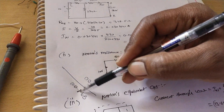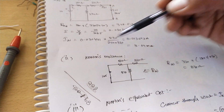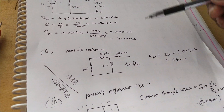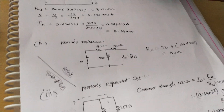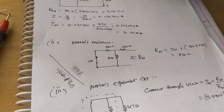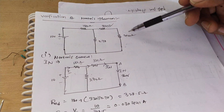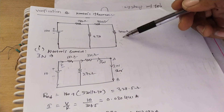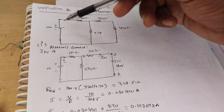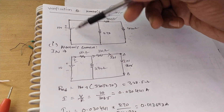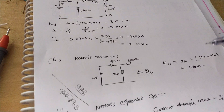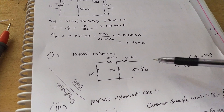Now we find Norton's resistance. To find Norton's resistance for this circuit, we open the 470 ohm and short-circuit the 10 volt source — similar to finding Thevenin's resistance.